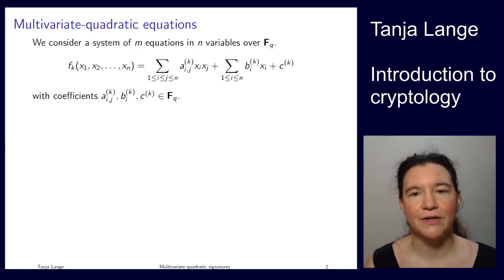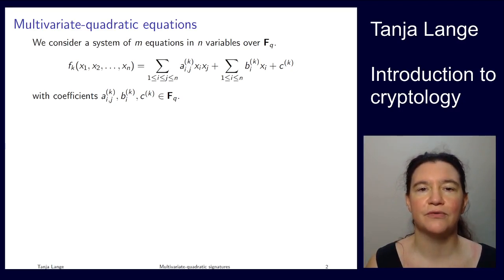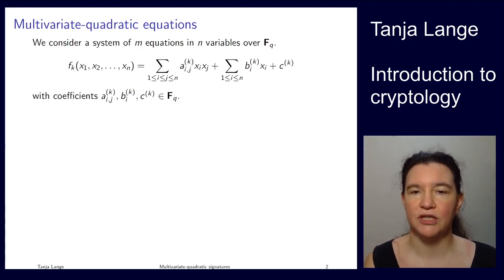So the last topic I want to cover in this lecture on post-quantum cryptography are systems based on multivariate equations. Here's an example of a multivariate quadratic equation. We're having a system of m different such equations and each of those equations